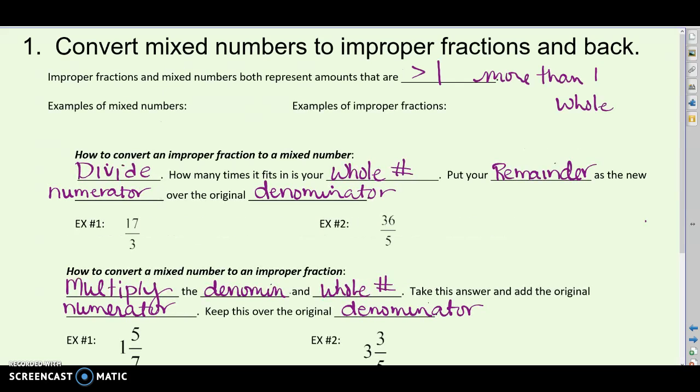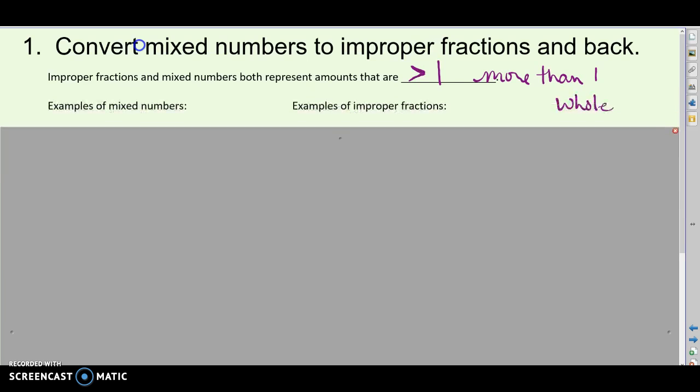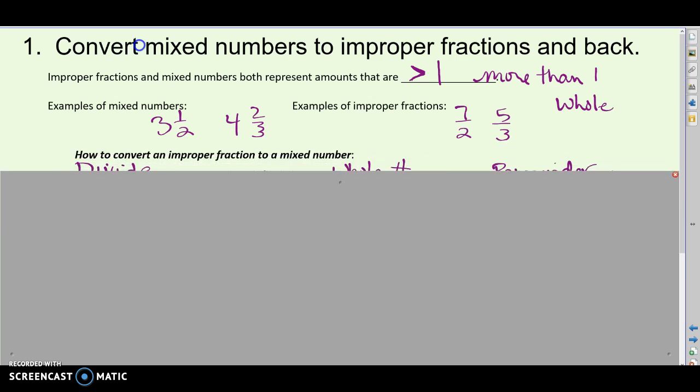First topic is converting mixed numbers to improper fractions and back. Improper fractions and mixed numbers both represent amounts that are greater than one. Remember, this is our greater than symbol. More than one whole. So we're talking about things like three and a half or four and two-thirds. Those would be mixed numbers, where the whole number is written out front, or improper fractions. Seven halves, five-thirds, just regular fractions, but where the numerator is bigger than the denominator. I have more pieces than it takes to make a whole.